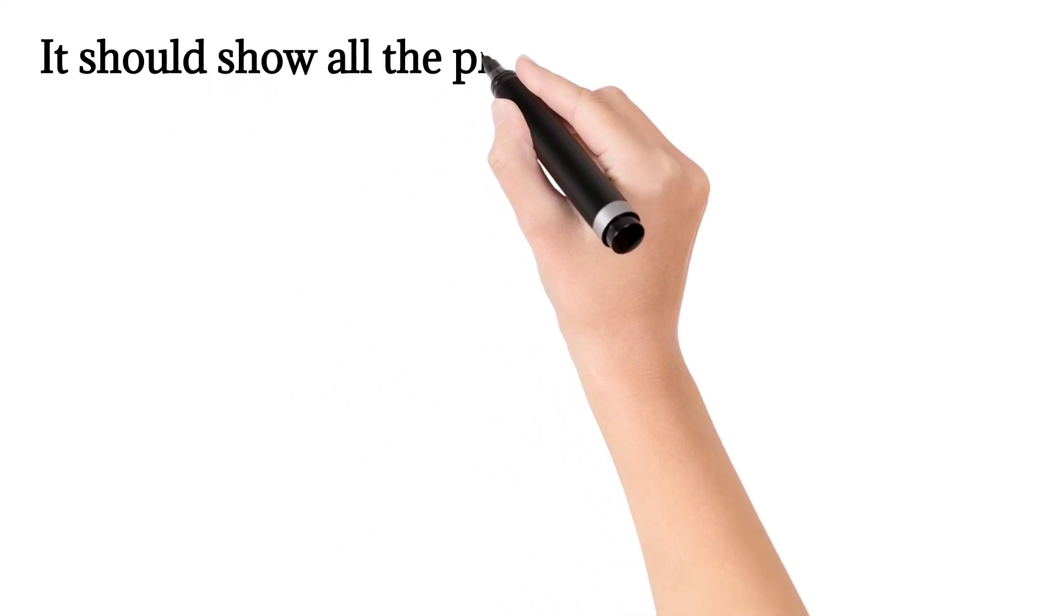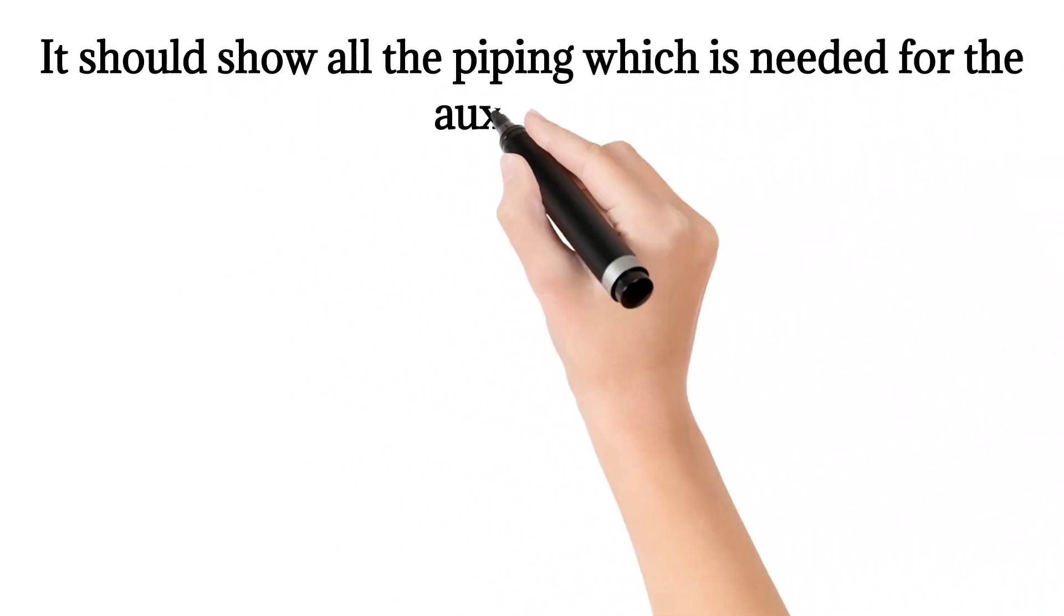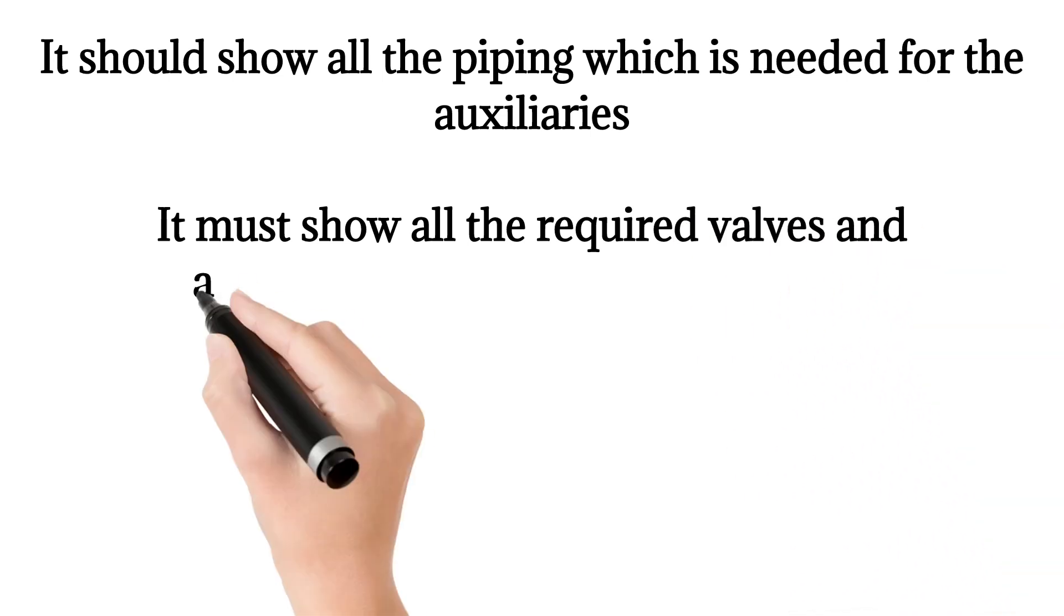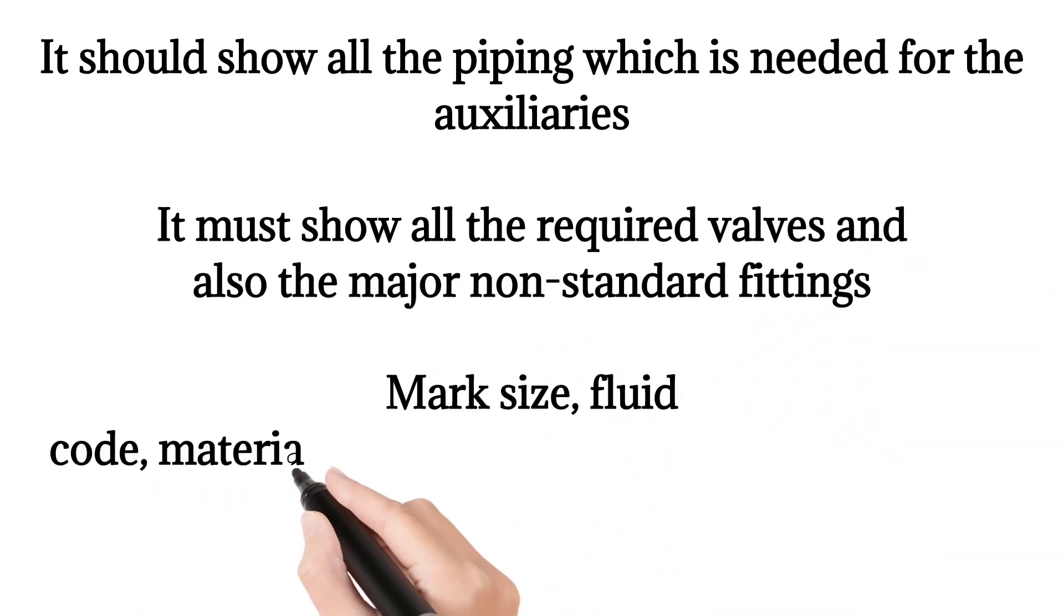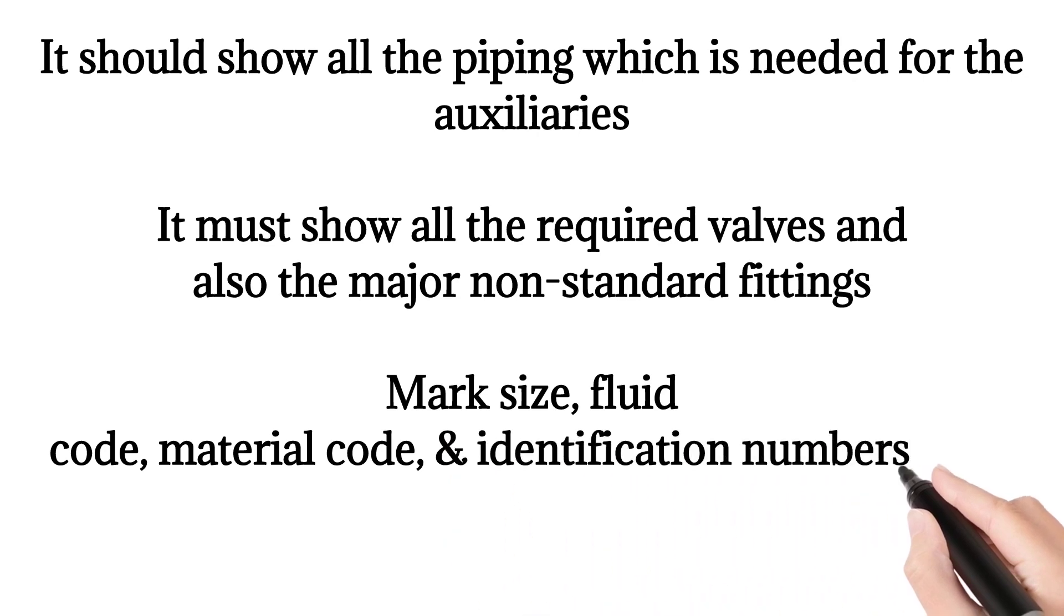It should show all the piping which is needed for the auxiliaries. It must show all the required valves and also the major non-standard fittings. Mark size, fluid code, material code, and identification numbers of all the pipelines should be included.